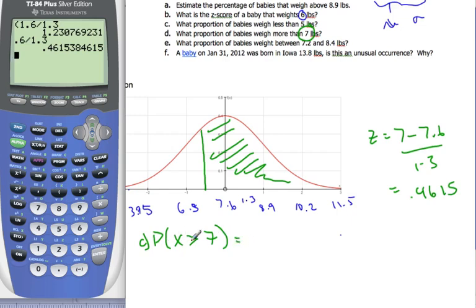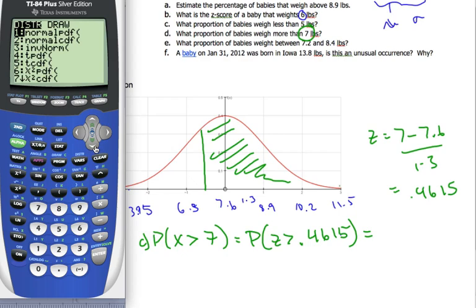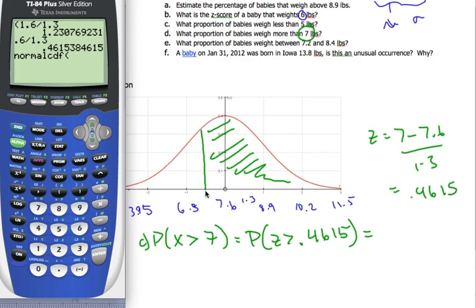So, the probability of being bigger than 7 is also the same as the probability of z being bigger than 0.4615. And if I go to my calculator, I can go now, second distributions, normal CDF. And I'm going to put my left-hand bound first, which is going to be 0.4615,